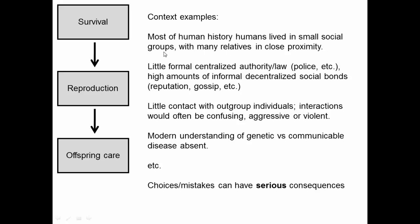For context examples: most of human history, humans lived in very small social groups with lots of relatives nearby. There was very little formal centralized authority — no such thing as the police until just a few hundred years ago. But there was a high amount of informal, decentralized social bonding, so a person's reputation was important and gossip was far more influential back then than it is today.